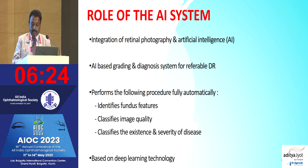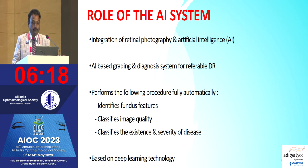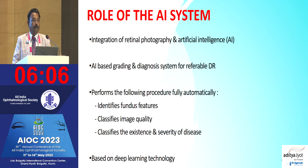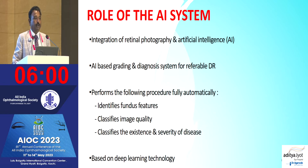With deep learning, you keep feeding the computer with images and details — this is normal, this is background diabetic retinopathy, proliferative diabetic retinopathy — and the system picks up the features. That's how AI works. For example, Google found that AI can determine whether a retina belongs to a male or female, something we as humans cannot determine when we examine a retinal photograph.